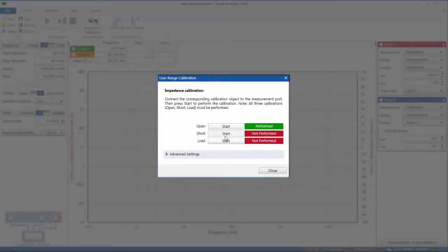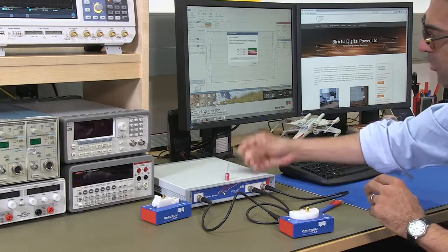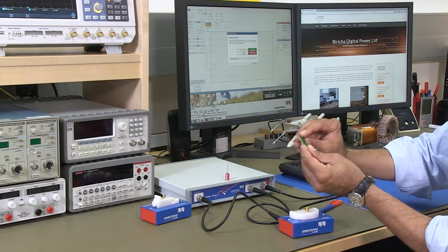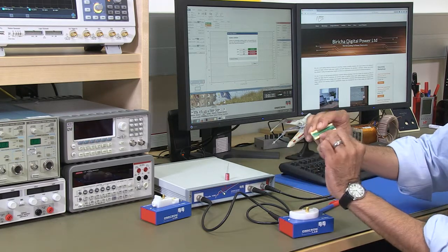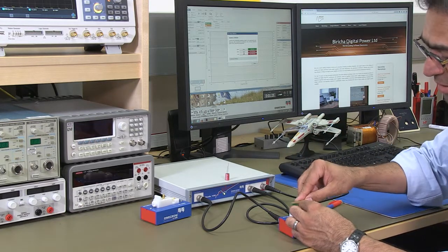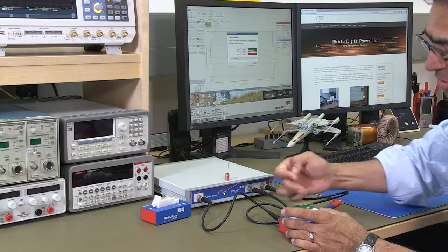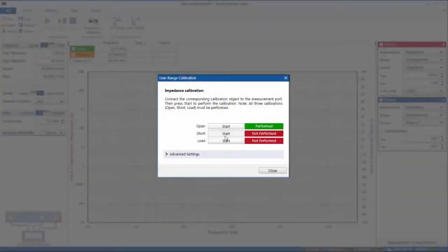Then short, we need to short these two and Bodhi 100 comes with this tiny little PCB which is designed for calibration and one side of it is just a copper bar. So if I put this side in you're actually shorting these two ends and then you do a short calibration.